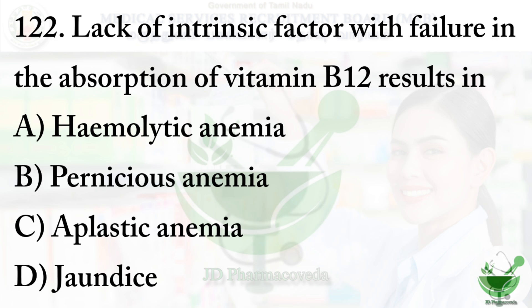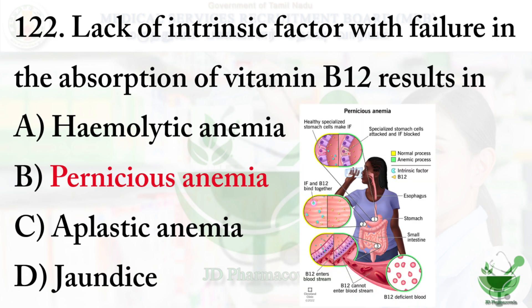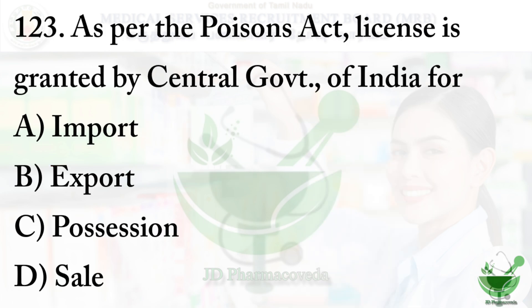Question 122: Lack of intrinsic factor with failure in absorption of vitamin B12 results in — Option A: hemolytic anemia, option B: pernicious anemia, option C: aplastic anemia, option D: jaundice. The right option is option B, pernicious anemia. It is an autoimmune disorder that prevents the stomach from producing intrinsic factor, a protein needed to absorb vitamin B12.